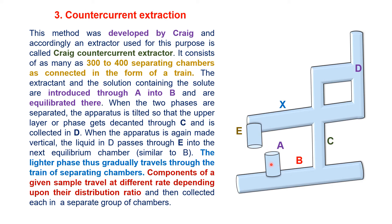The mixture is shaken and equilibrium is established in chamber B. It is then tilted and the upper layer moves toward D via C. When made vertical again, the liquid from D moves toward E and is collected in the next chamber, similar to B. The lighter phase gradually travels through the drain of separating chambers. Components of the sample travel at different rates depending on their distribution ratio and are collected each in a separate group of chambers.